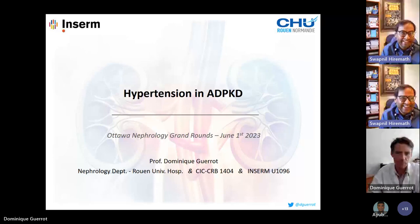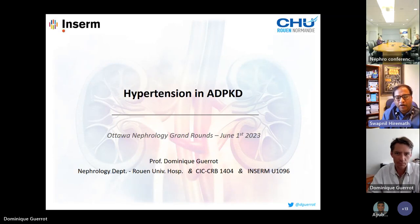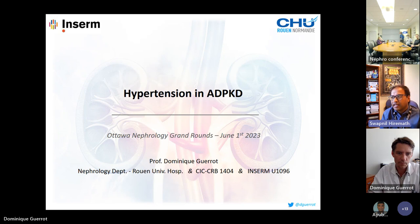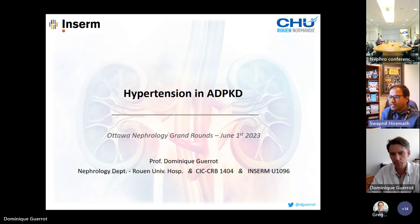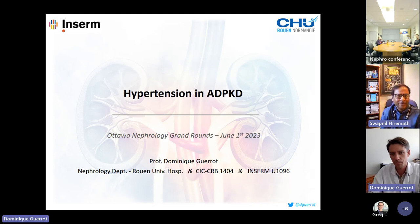This is Dominique Giro from France, presenting today on hypertension in ADPKD. Dominique is the head of nephrology at Rouen University in France since 2015. He has an MSc and a PhD, and his research interests are mainly focused on arterial hypertension, endothelial dysfunction, and polycystic kidney disease. He has authored over 100 publications and is an active member of several societies, also leading the Nefro Audio Medit podcast program. Welcome, Dominique.